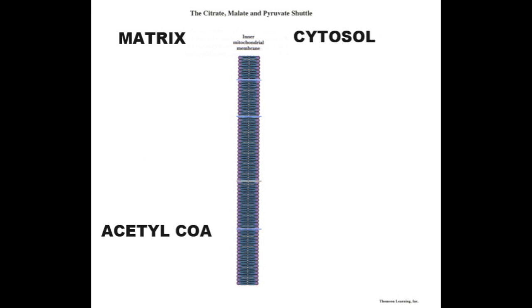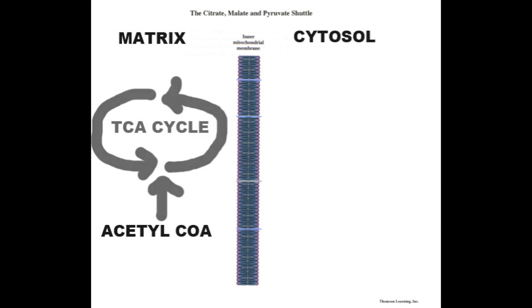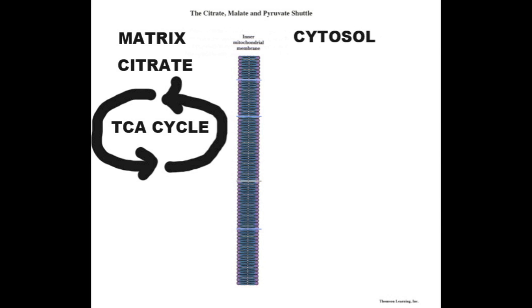The acetyl-CoA can be converted into ketone bodies, but most of the acetyl-CoA is going to be pushed into the TCA cycle. The TCA cycle produces reduced coenzymes and ATP, and as you are well aware, citrate is one of the intermediates of the TCA cycle.